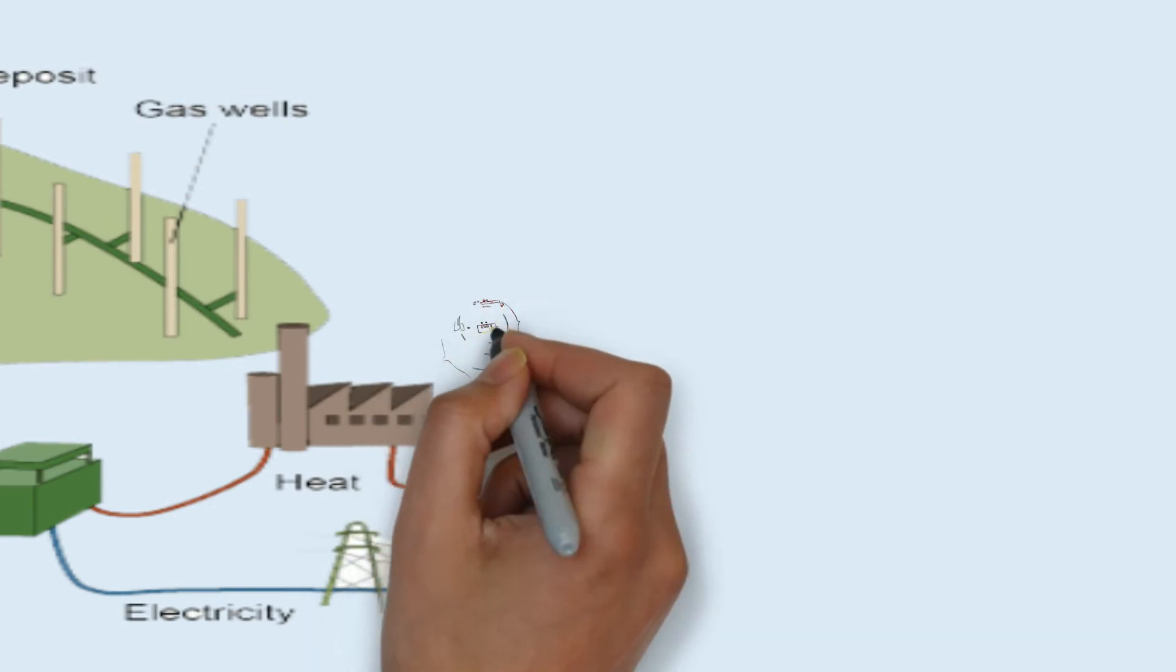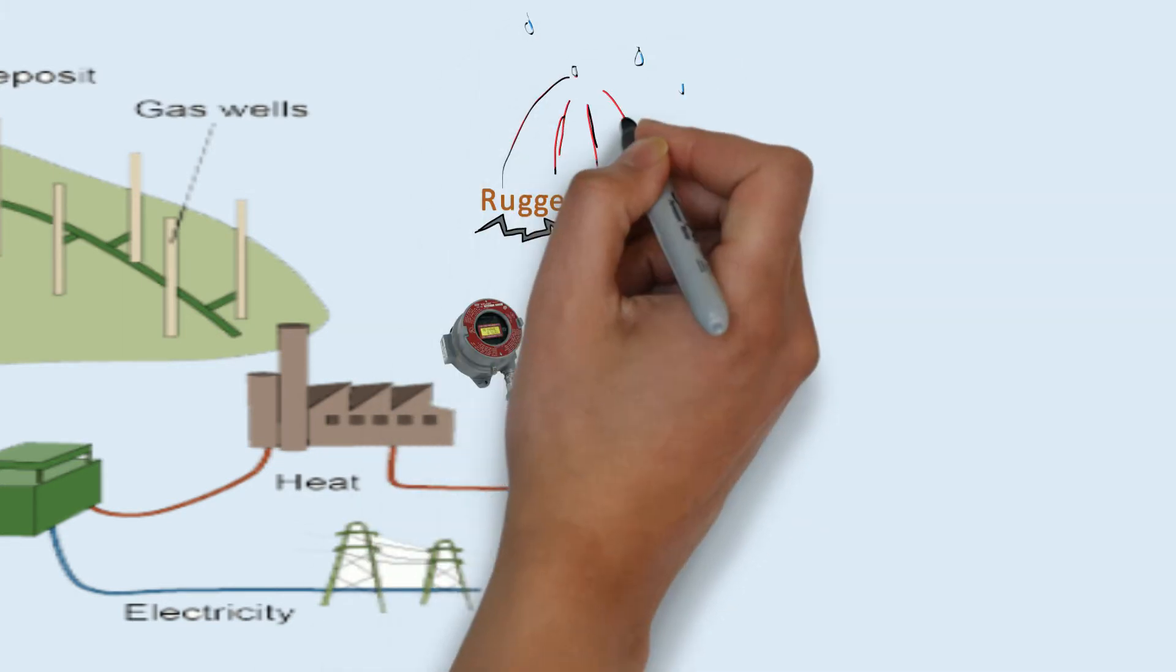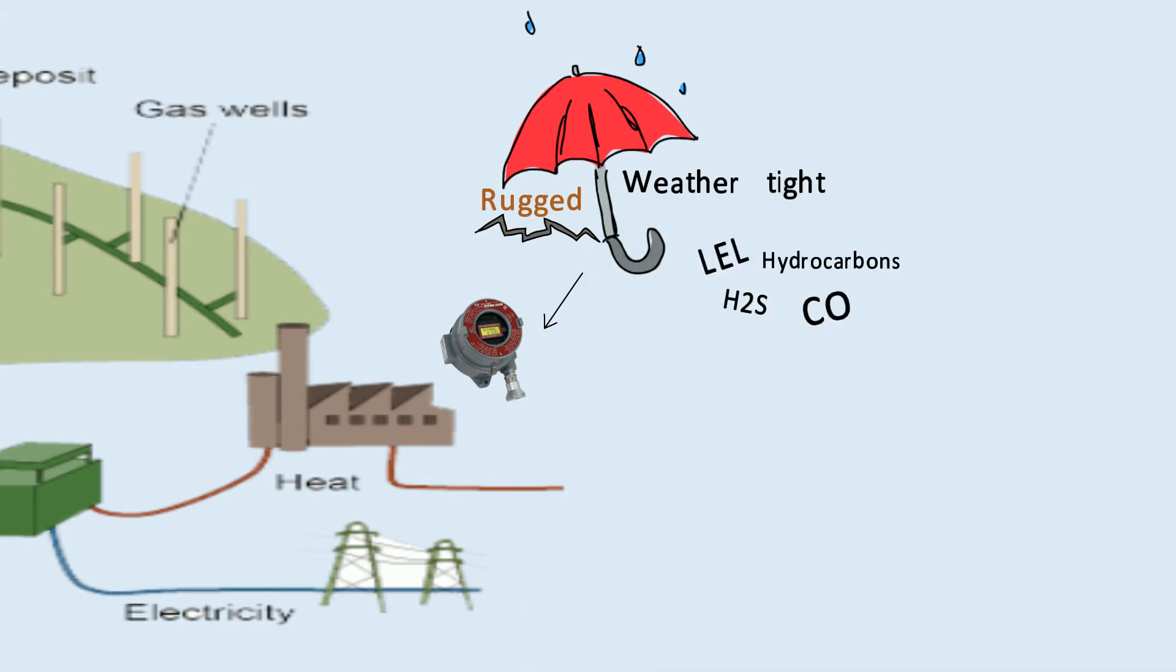The M2 fixed standalone transmitter for monitoring in buildings. It can be integrated with the controller. It's a rugged, weather-tight and explosion-proof device with long-life sensors for multiple gases.